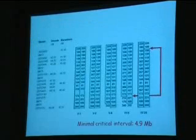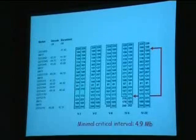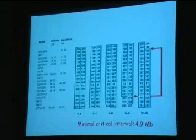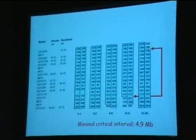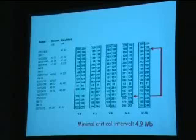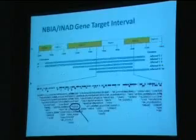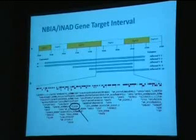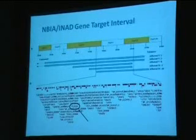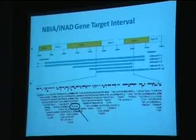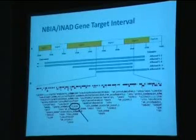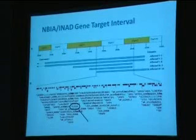We undertook our studies as described. On chromosome 22, we identified a critical interval shared by all affected members of the family who were homozygous for this region, and this was just under five megabases. Within this region there were about 100 genes, and after sequencing the first few we became quite disheartened as there didn't seem to be any obvious candidate genes within that region.